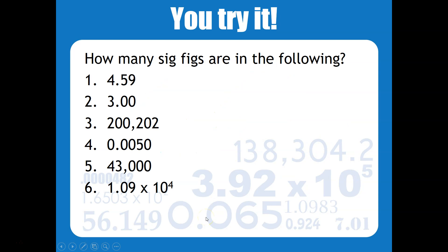So you try it — feel free to pause this video or work along with me for the first couple and then try some on your own. In the first example, notice there are no zeros in this number, so all three are significant. In the second example, we have trailing zeros — these are sometimes significant, only if there's a decimal point. There is a decimal point, so these will also be three sig figs. We've got two sets of zeros here that are actually captive zeros because they're between non-zero numbers. Remember, captive zeros are always significant, so every single one of those numbers is a sig fig.